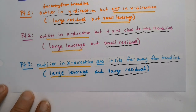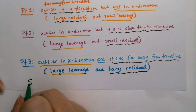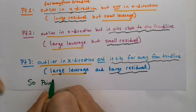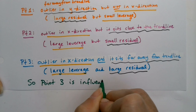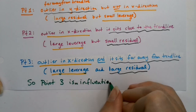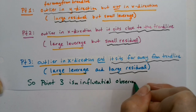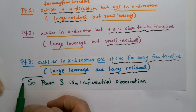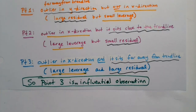Point one is also far away from the trend line, but it didn't matter because point one was not far away in the x direction — it was still amongst all the other points. Being far away from the trend line gives you a large residual. Point three has both a large residual and large leverage, making it an influential observation, because that's what you're looking for.